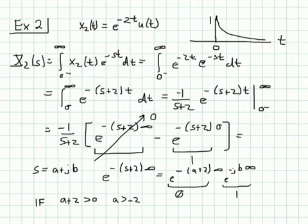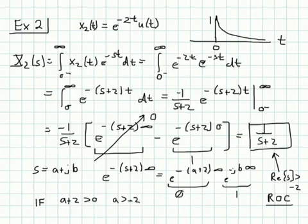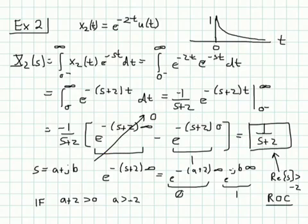When that condition holds, the infinity term goes to 0, and we're left with minus 1 over (s+2) times minus 1, which gives us 1 over (s+2). This is valid for the real part of s greater than minus 2, which we refer to as the region of convergence. So the Laplace transform of e^{-2t}u(t) is 1/(s+2), valid for Re(s) greater than minus 2.